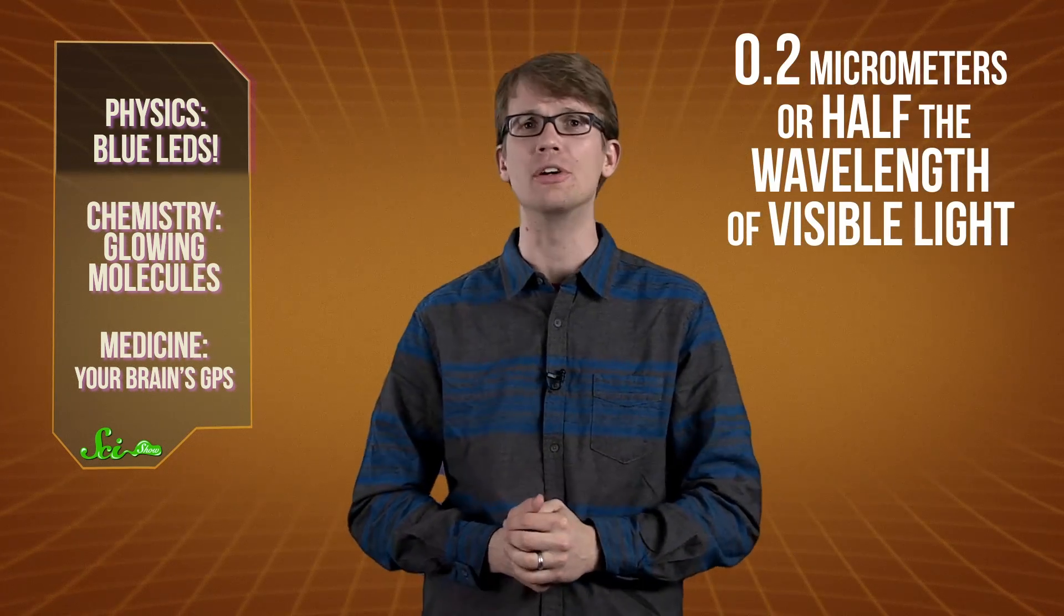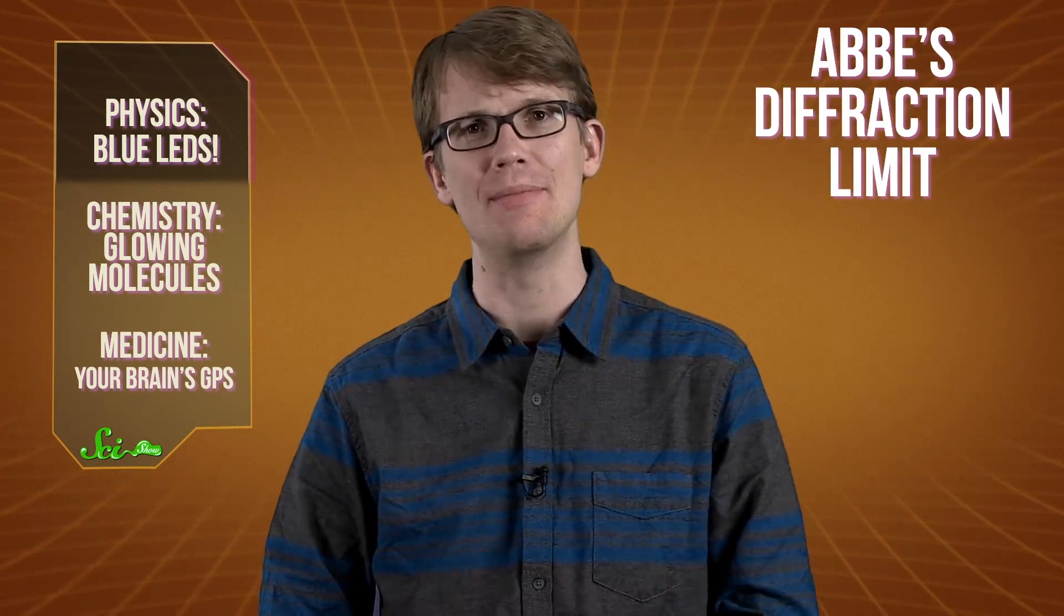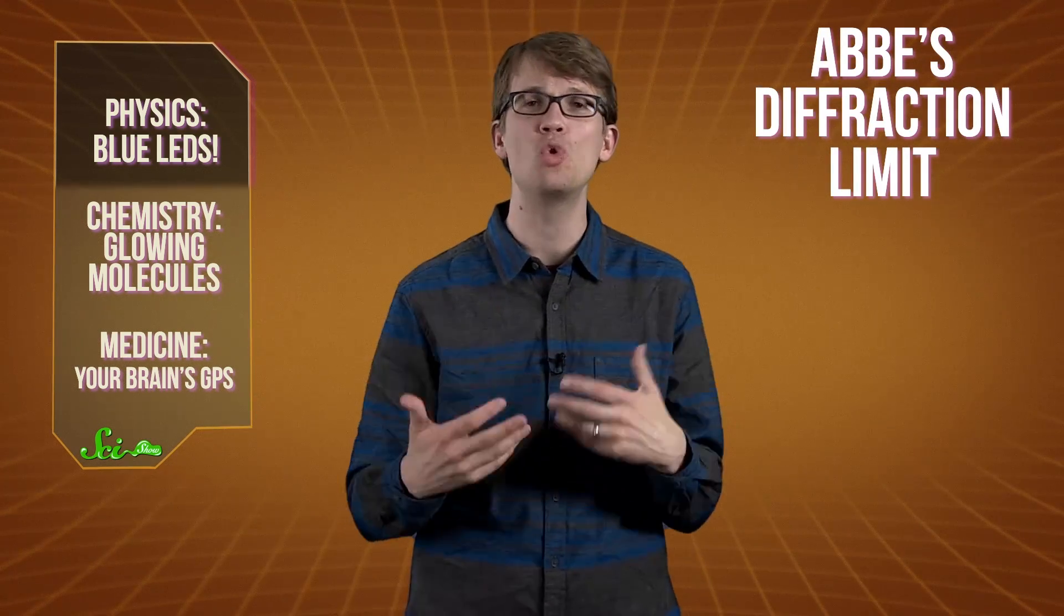For the winners of this year's chemistry prize, light posed a different kind of challenge. For centuries, scientists have been limited by the fact that optical microscopes couldn't achieve a resolution smaller than 0.2 micrometers, or half the wavelength of visible light. This has to do with how light diffuses through a microscope's glass lens, and was known as Abe's diffraction limit. This limit meant that we could clearly see living cells, but we couldn't see individual molecules or proteins inside them.